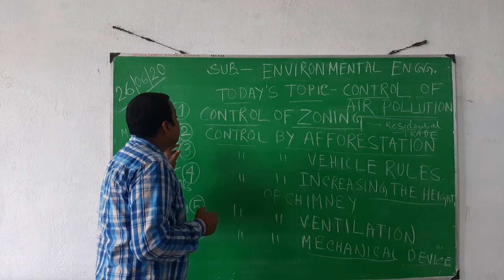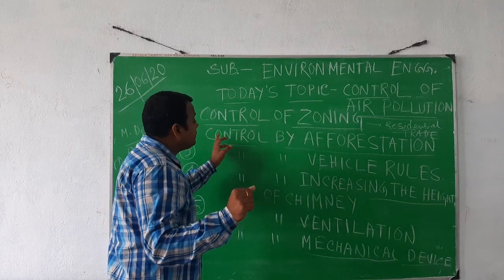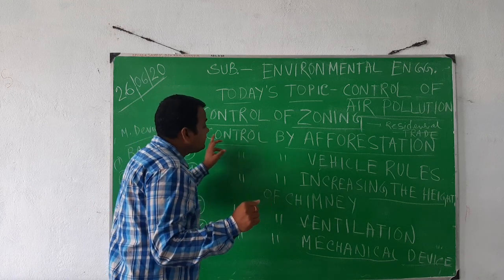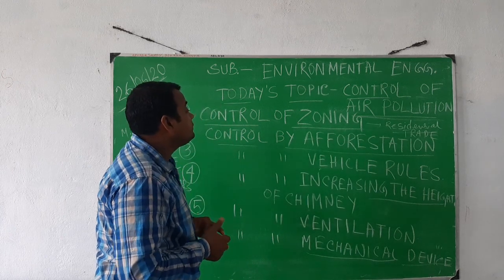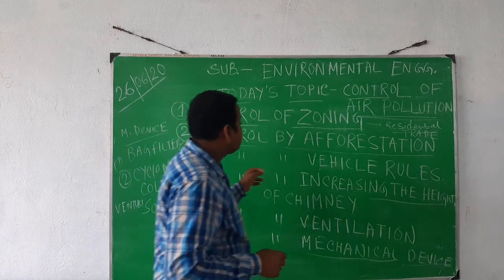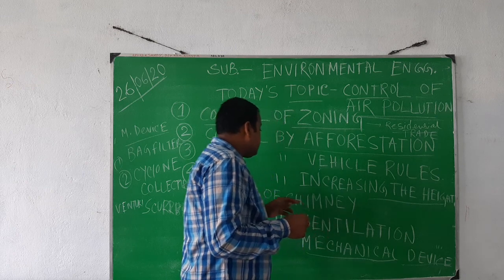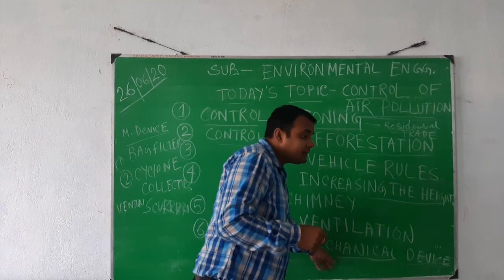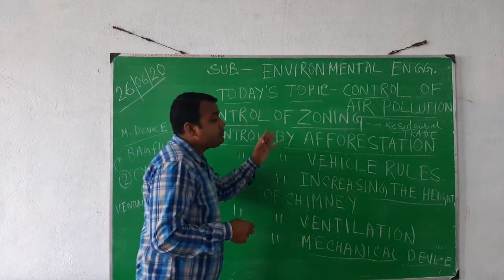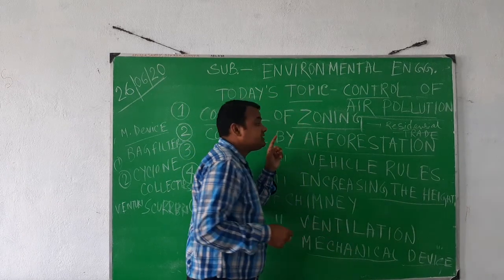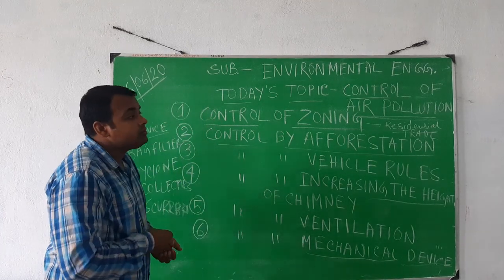To summarize, the methods of control of air pollution include: control by zoning, control by afforestation, control by increasing the height of the chimney, control by ventilation, and control by mechanical devices. This is the control of air pollution — a very important topic. Thank you to all the students.